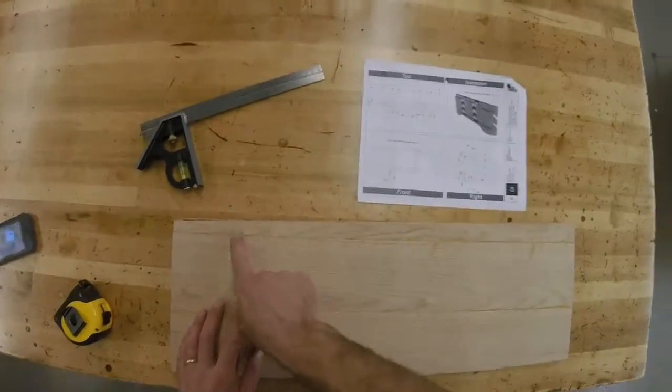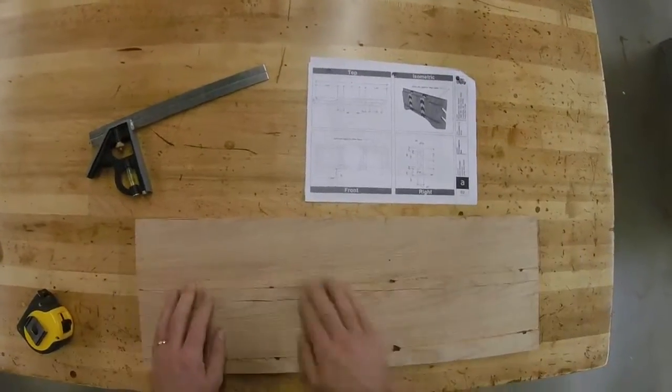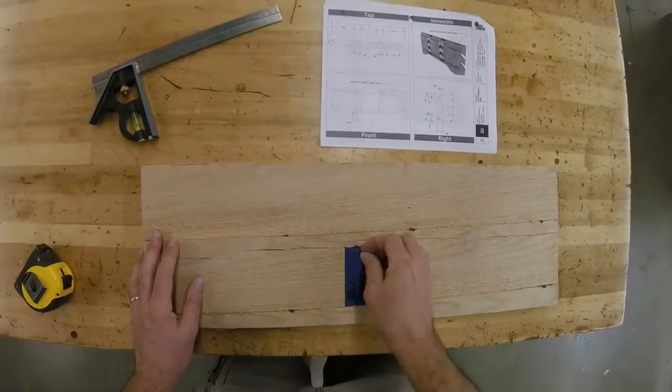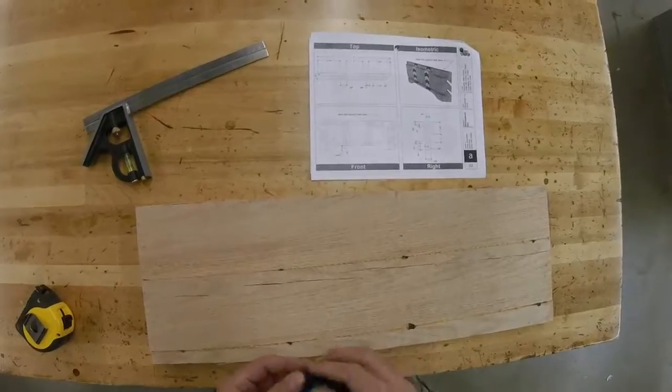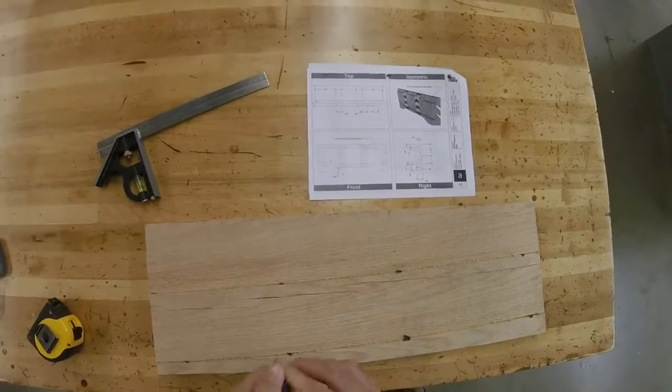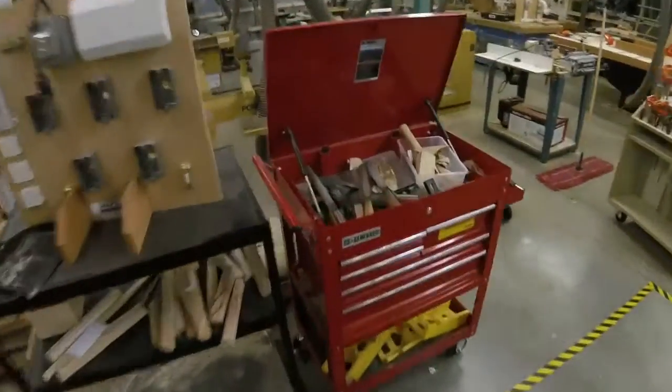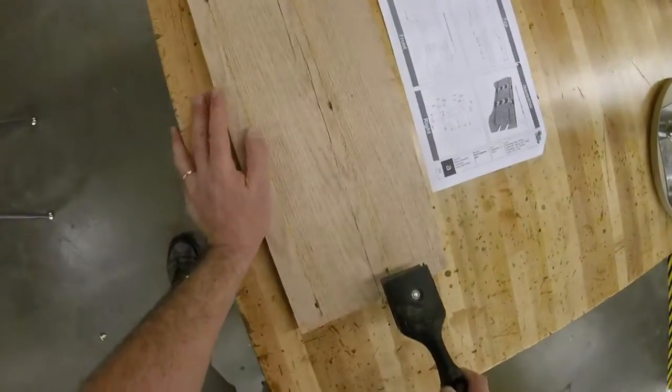Before I do that, however, I'm going to get my scraper. We're going to scrape off all this glue so that I don't ruin my blades, and I'm also going to take off this sticker because I don't want that getting stuck in the planer. Let's go get a scraper, and we're going to scrape this off.